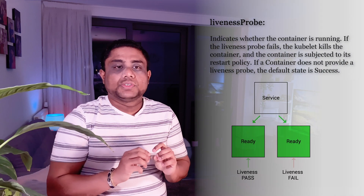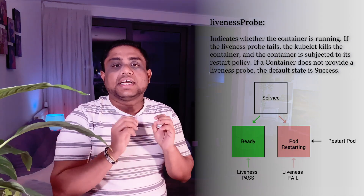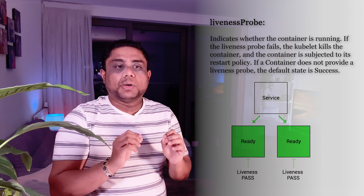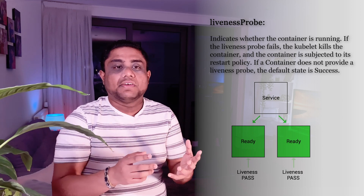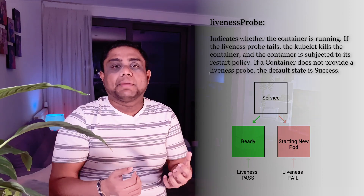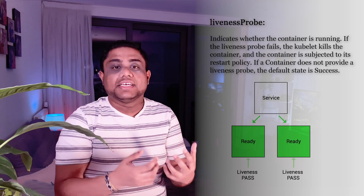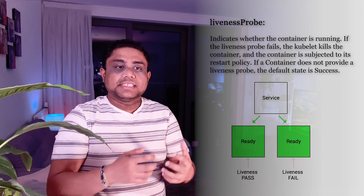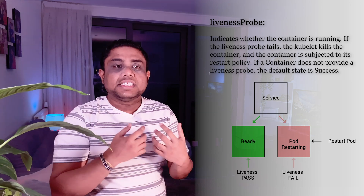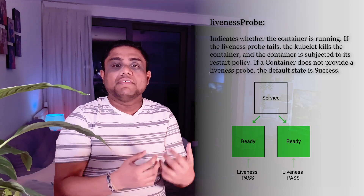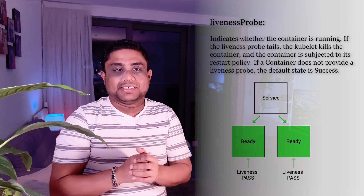The Kubelet uses liveness probes to know when to restart a container. For example, liveness probes can catch a deadlock when the application is running but unable to make progress because of some failure inside the application code. Restarting a container in such a state can help to make the application more available despite the bugs.